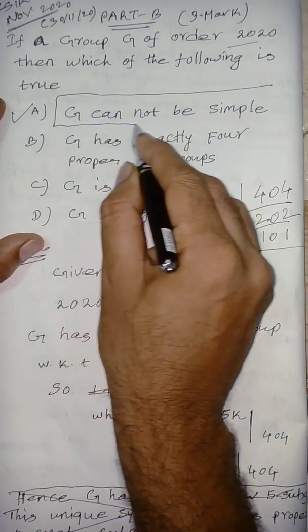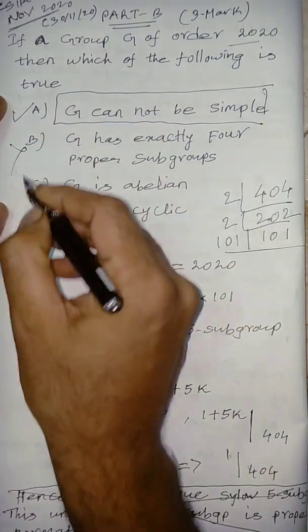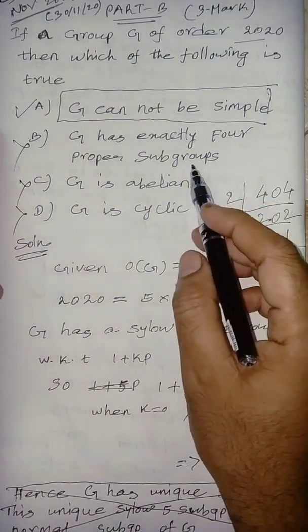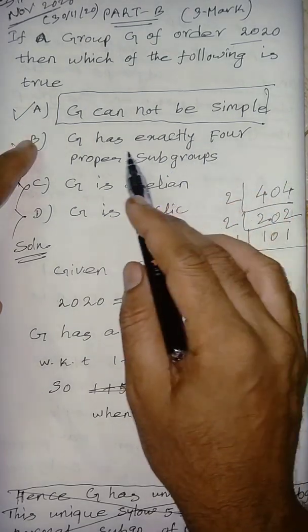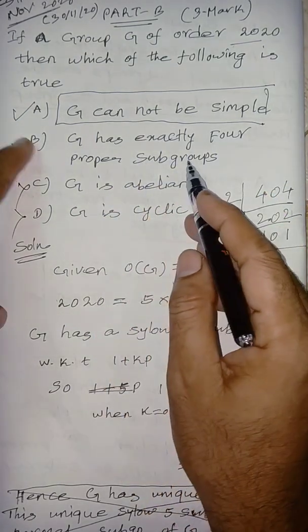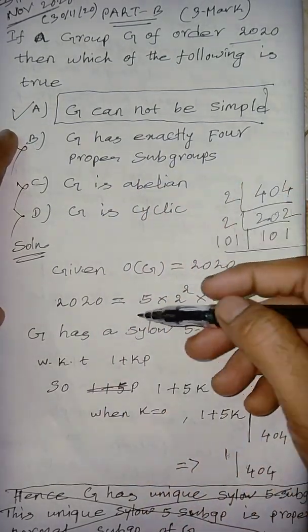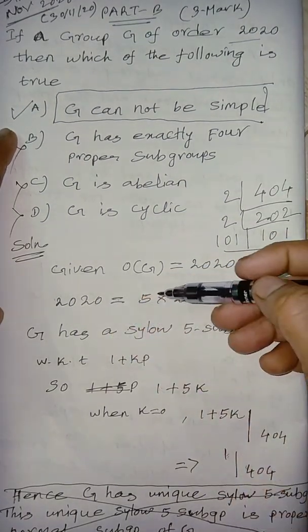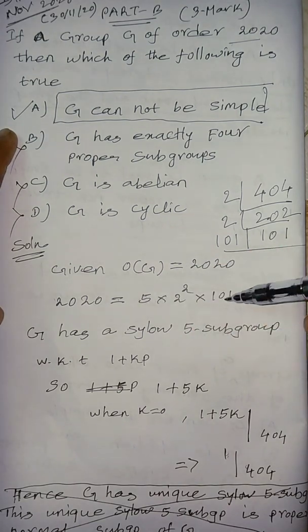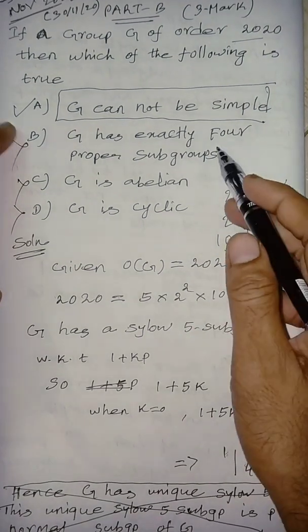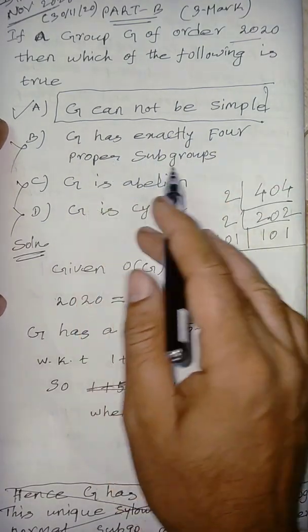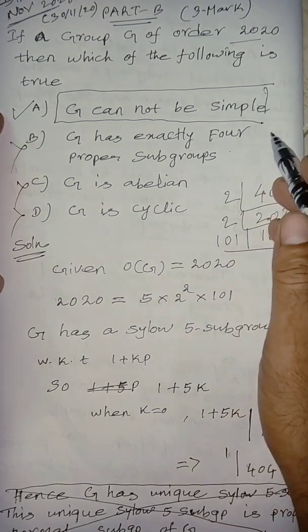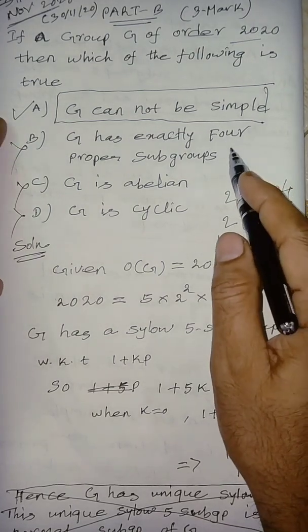What about the second option? Remaining all are wrong by default. But we should know about the reason. G has exactly four proper subgroups - it is not possible. It may be three or two or three, because 2020 other divisors are 5, 2², 101. So we can't say four proper subgroups.